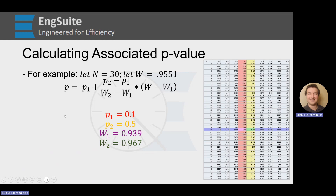In this example, let n equal 30 and let w equal 0.9551. First, we find the row where n equals 30 and draw across. We evaluate each value: 0.900 is less than 0.9551, 0.912 is still less, 0.927 is still less, 0.939 is still less, but 0.967 is greater. So w1 is 0.939 and w2 is 0.967. We draw these up — these are p1 and p2 — and plug them into the equation to get the associated p-value for our W.